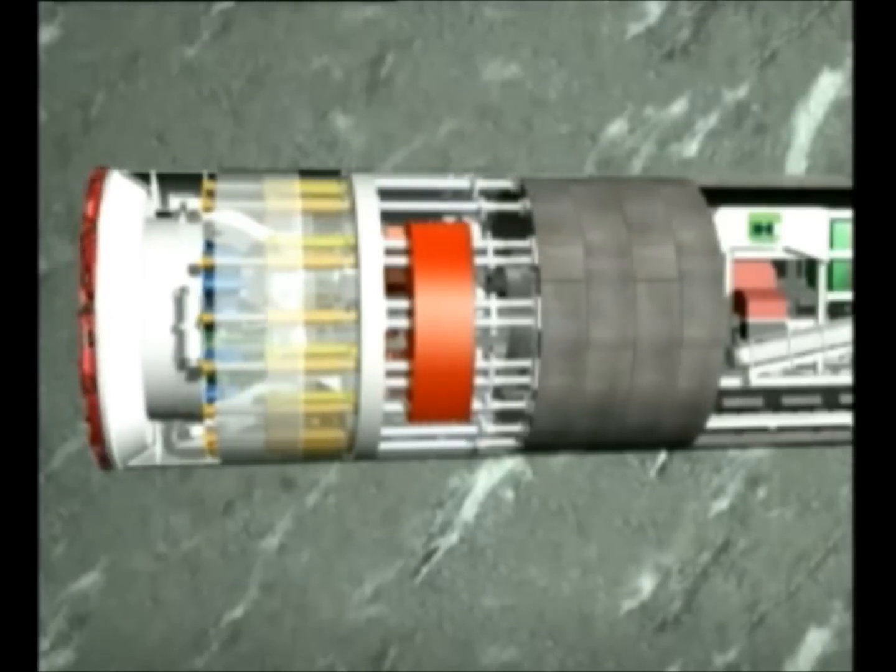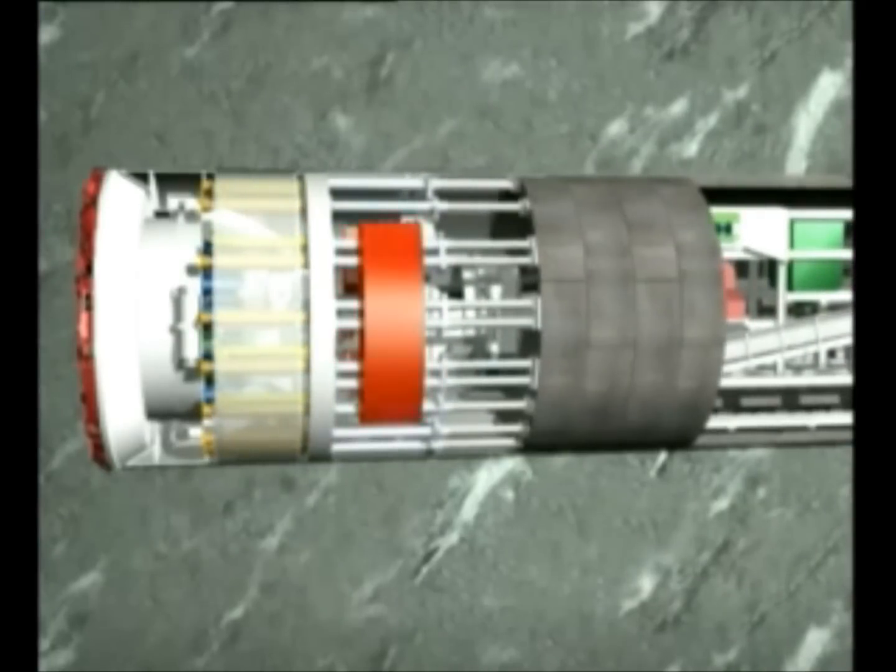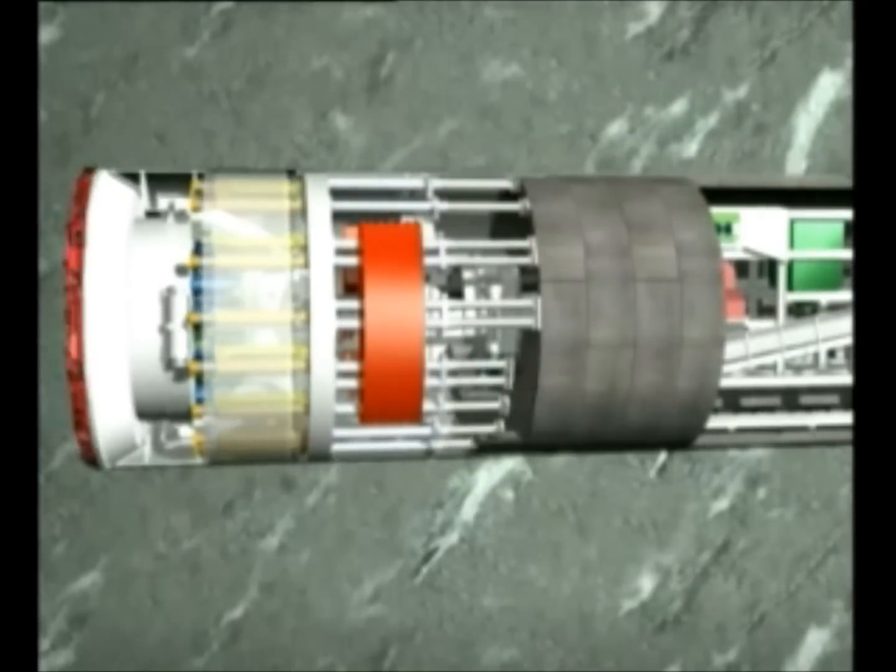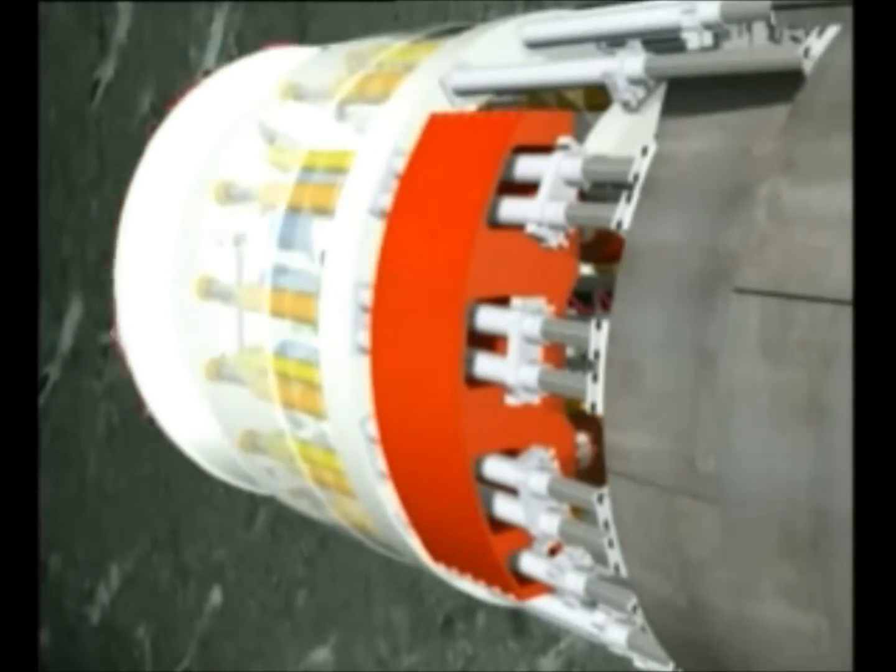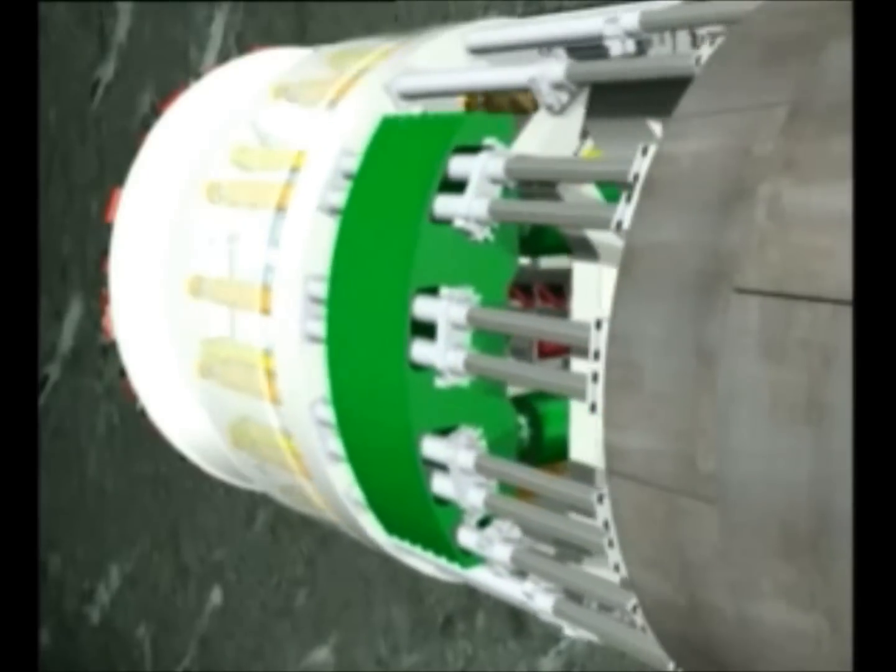After completion of a stroke, the gripper shoes are retracted, and the rear section of the machine is pushed forward against the front shield with the auxiliary thrust cylinders. The re-grip phase takes only a few minutes. Subsequently, the next section can be excavated.